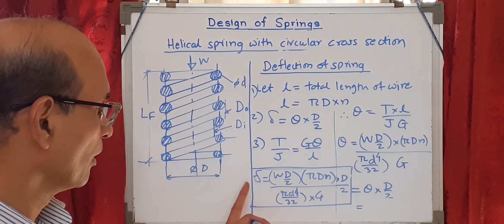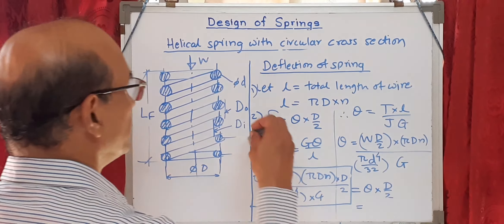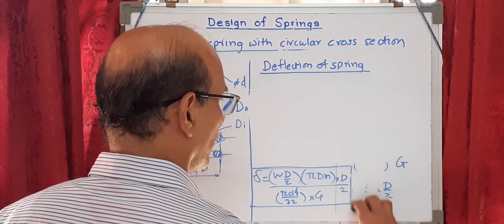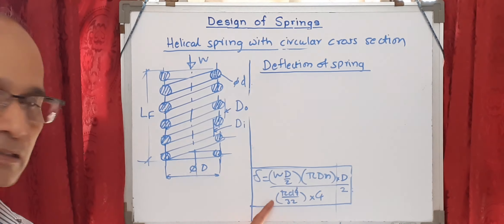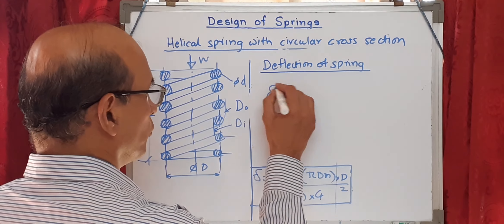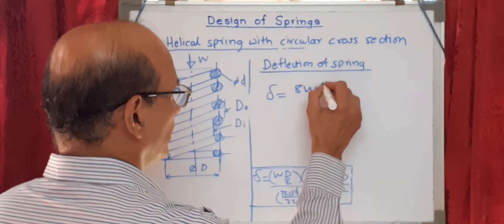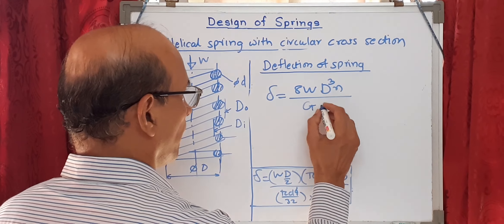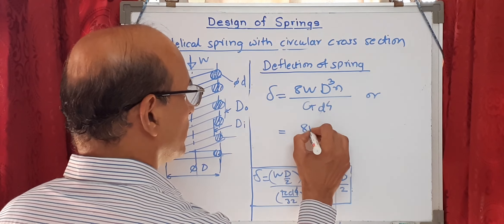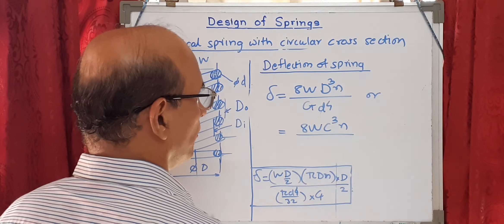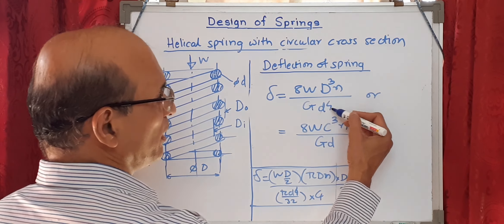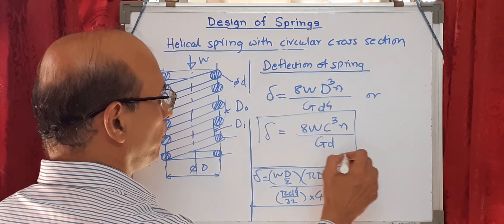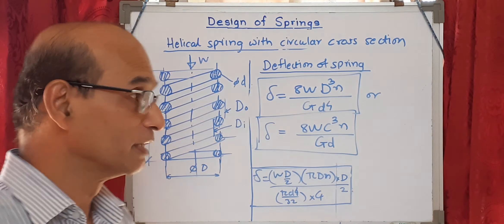After rearranging all the terms, the deflection equation becomes: delta equals 8·W·D³·N upon G·d⁴. In other words, since D/d equals the spring index C, this can also be written as 8·W·C³·N upon G·d, where three D's combine with three d's to give C³, and one d remains in the denominator.